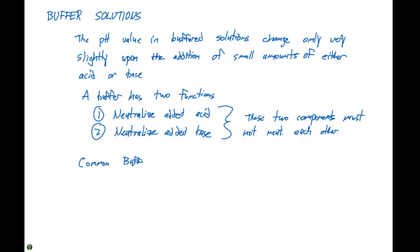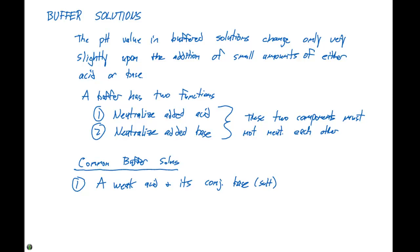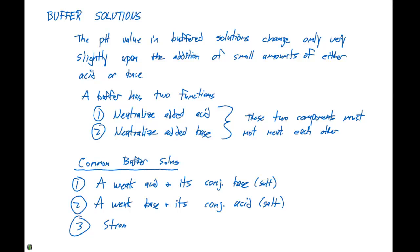There are three types of solutions that will meet the criteria. Number one is a weak acid and its conjugate base, where that conjugate base is a salt solution. Number two is a weak base and its conjugate acid, also a salt. And the third common buffer solution is a strong acid and an excess amount of the conjugate base of a weak acid.